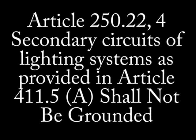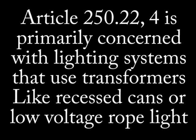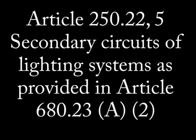Part 4: Secondary circuits of lighting systems as provided in Article 411.5 Section A shall not be grounded. This would apply to something like recessed cans that use a step-down transformer or a transformer-fed low-voltage rope lighting system.